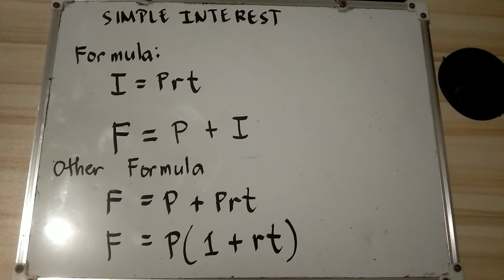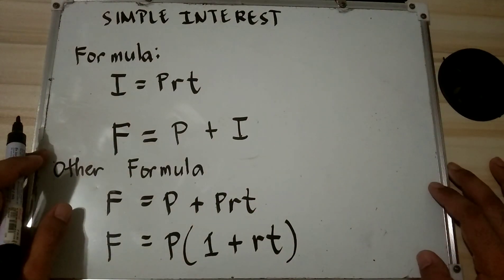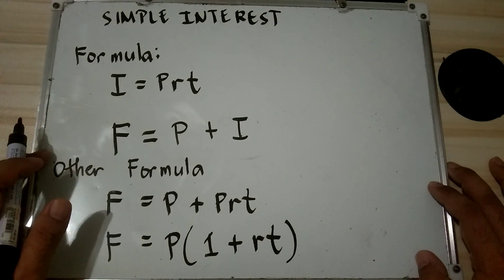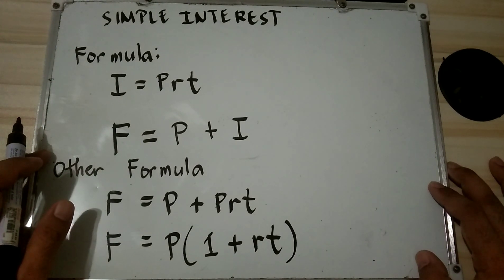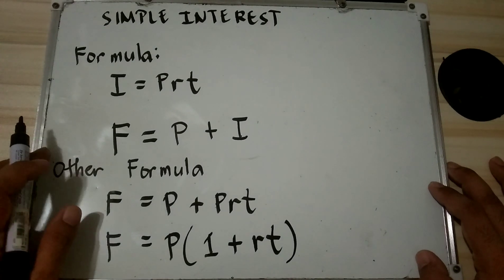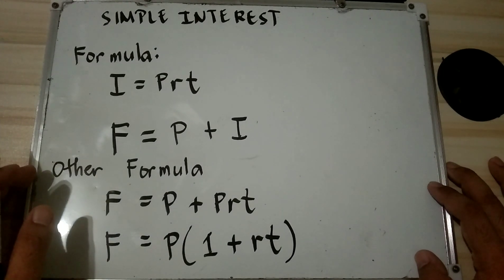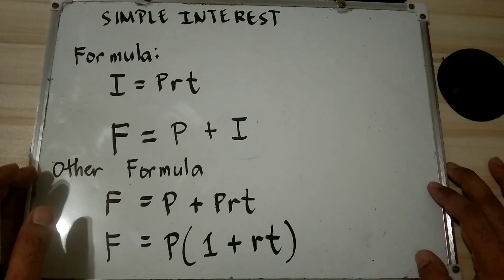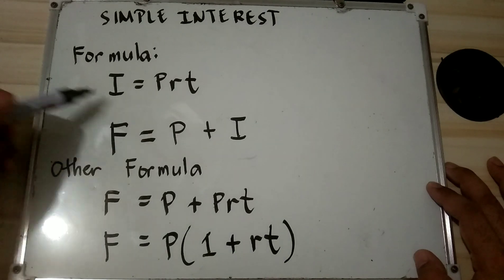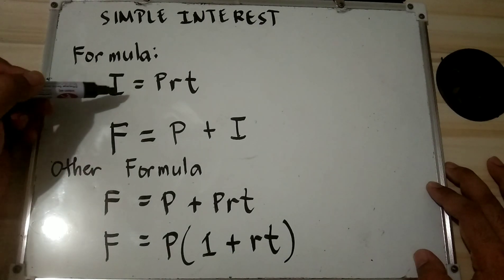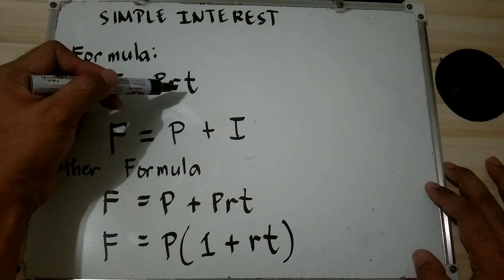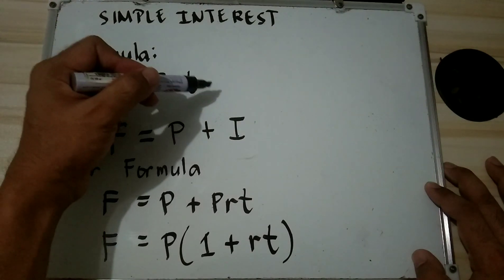Simple interest: when money is borrowed, interest is charged for the use of that money for a certain period of time. When the borrowed money is paid back, the principal and the interest accrued are also paid back. The amount of interest depends on the interest rate, the amount of money borrowed, and the length of time the money is borrowed. The formula is: Simple Interest (I) = Principal × Rate × Time.